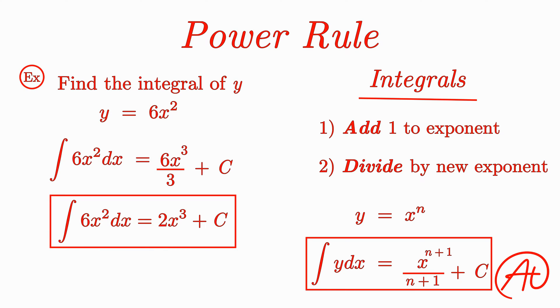And remember, we can always take the derivative of this result to see if we're right. Taking the derivative of 2x cubed plus a constant would give us 6x squared, which is exactly where we started.